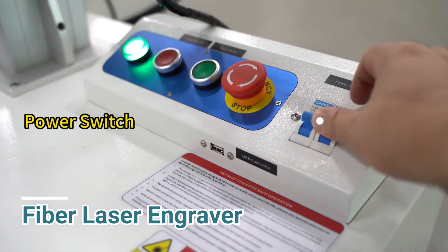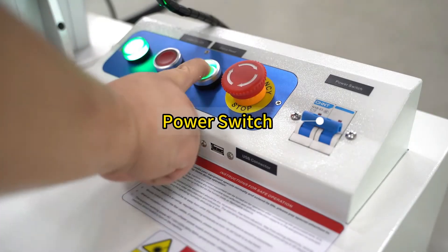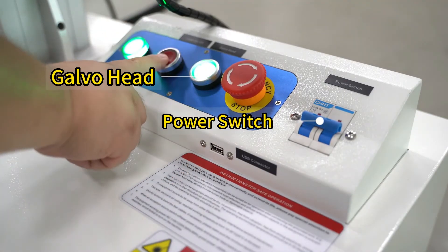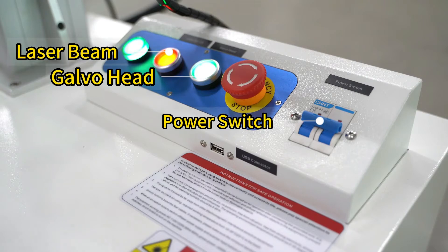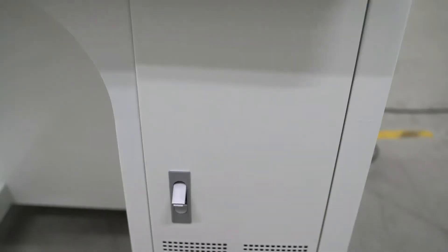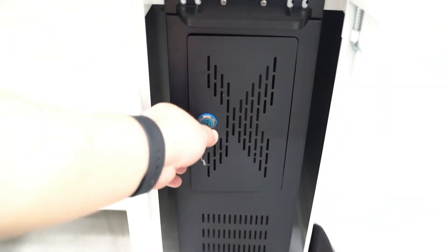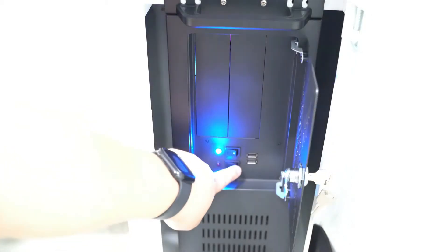After the cables are connected, let's move to the desk table and turn on the power switch, galvo head button, and laser beam button one by one. Open the cabinet under the desk and turn on the computer.